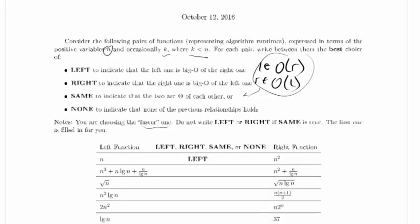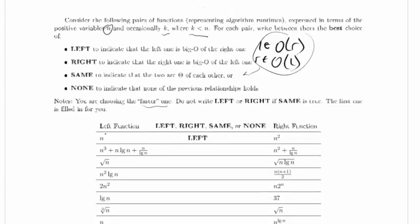The first one is filled in for us. Yeah, sure enough, n is an element of big O of n squared, so this should be LEFT.